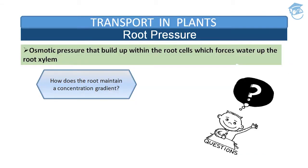Now, root pressure. As various ions from soil are actively transported into the vascular tissues of the root, water follows its potential gradient and increases the pressure inside the xylem. This positive pressure is called root pressure, and it can be responsible for pushing water up to a small height in the stem. To see that root pressure exists, choose a small soft-stemmed plant and on a day with plenty of atmospheric moisture, cut the stem horizontally near the base with a sharp blade early in the morning, and you will soon see drops of solution ooze out of the cut stem.